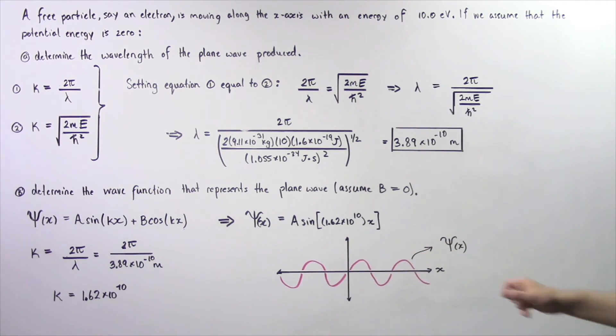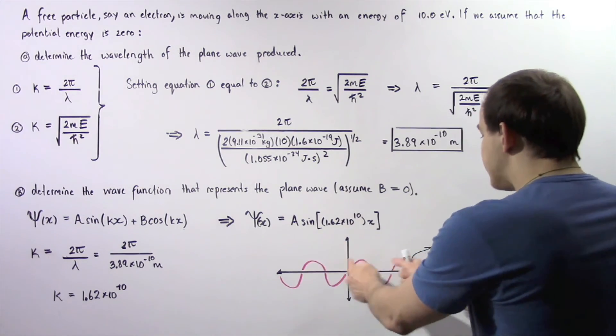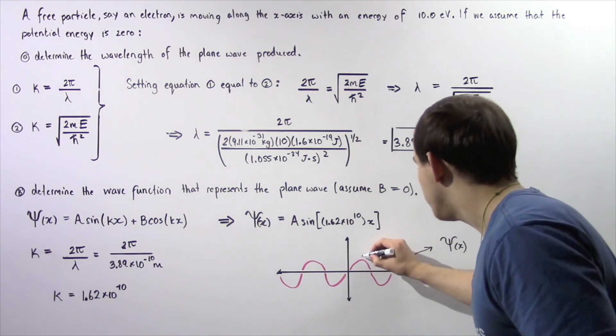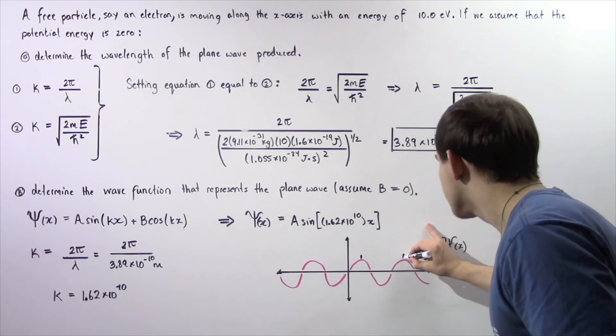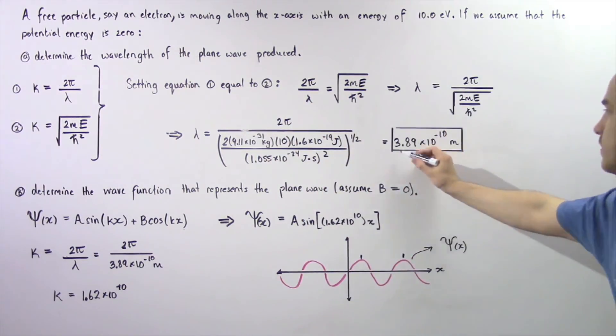So it looks something like this. And the distance between any two consecutive crests of our plane wave produced by the free particle is given by 3.89 times 10 to the negative 10 meters.